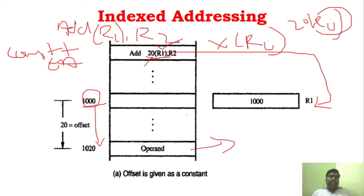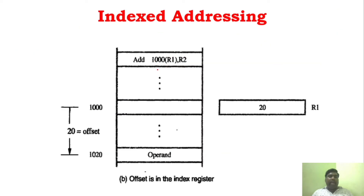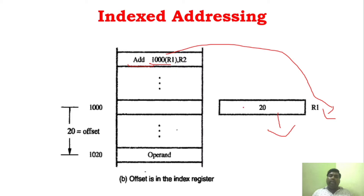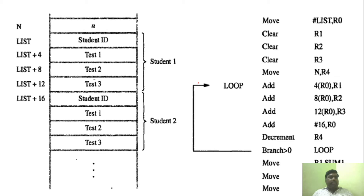This is called index addressing. The offset is very important. You can see here: ADD 1000, R1 — here 1000 is the memory location and R1 is the offset value. So 1000 plus 20 equals 1020, and then the operand is found. This is called index addressing — a different way.